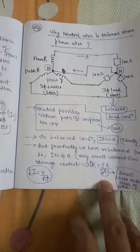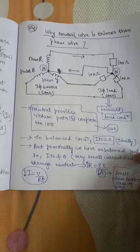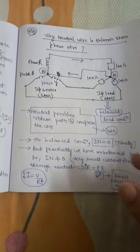By the formula rho L by A, the area of the cross section becomes very small due to the small area of cross section. Because of this one reason, neutral wire...